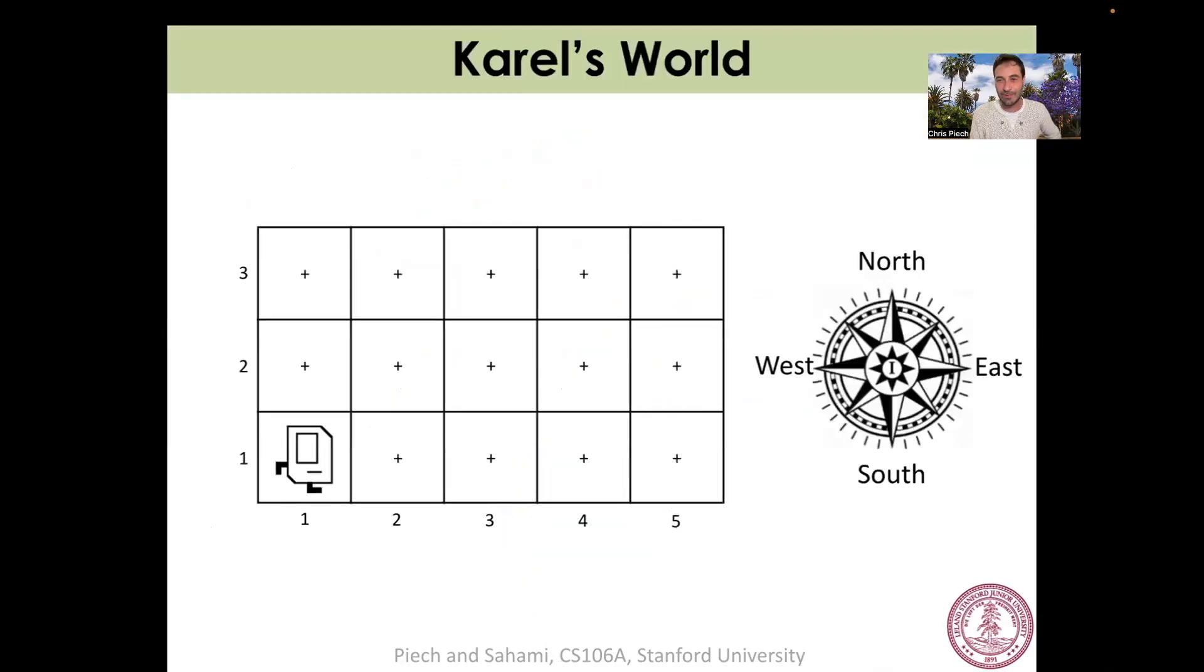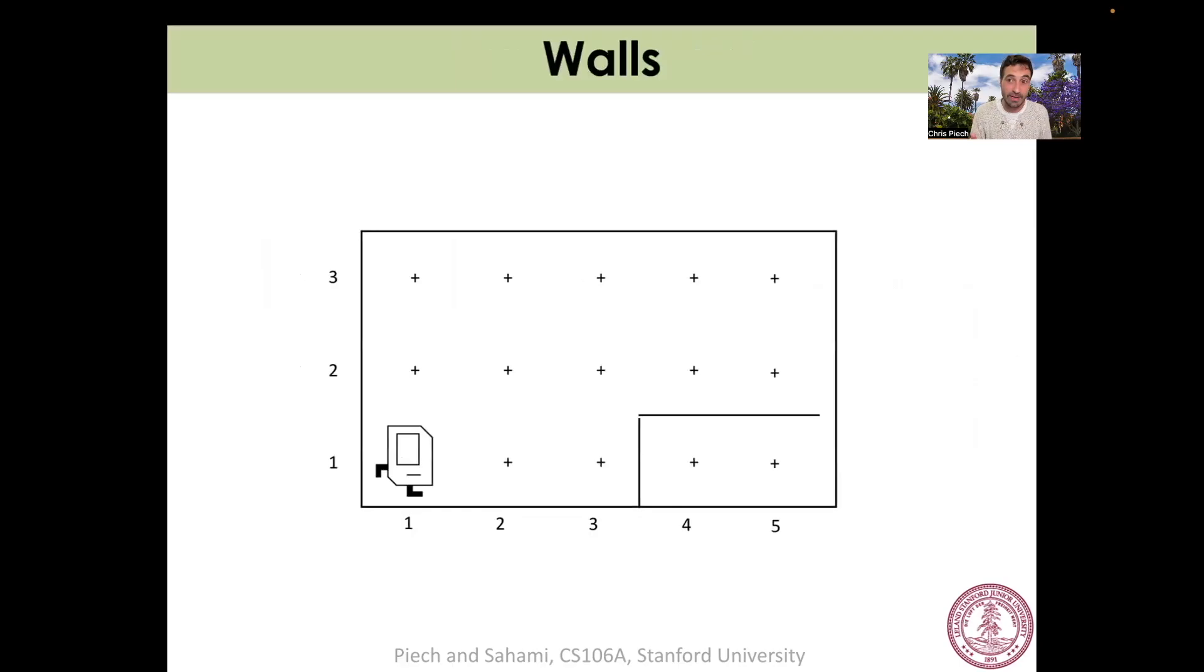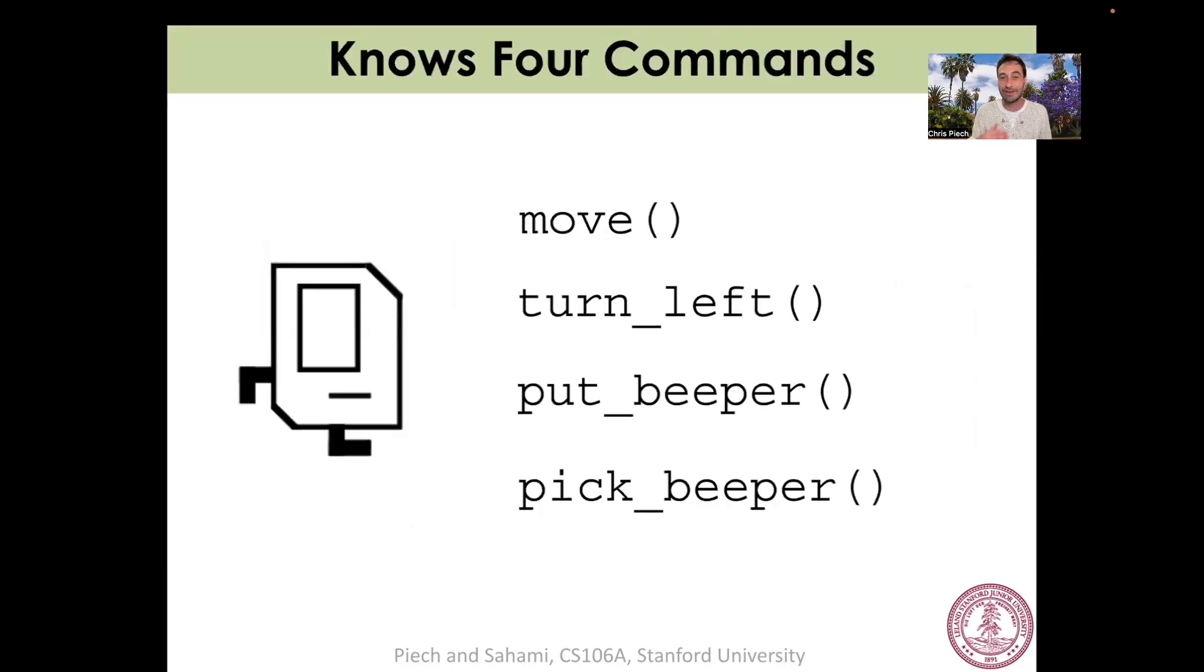So Carol is our lovable robot. And Carol lives in a world. We think of the world as kind of having a north, west, south, and east and having compass directions. And in this world, there's not that much. There's walls and Carol can't walk through those walls. And there's beepers. Beepers might not seem exciting, but beepers are basically the most exciting thing in all of Carol's world. Carol can pick those beepers up and Carol can put those beepers down in addition to move and turn left.